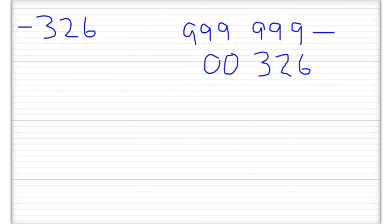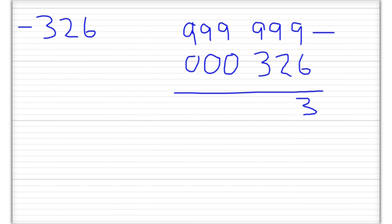So: 9 minus 6 is 3, 9 minus 2 is 7, 9 minus 3 is 6, and 9 minus 0 is 9 for the remaining digits. That gives us 9999673 — that is our nines complement, representing minus 326.